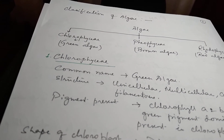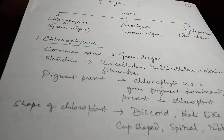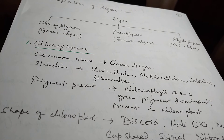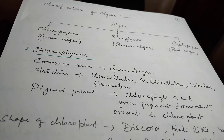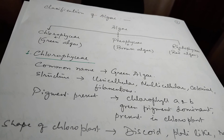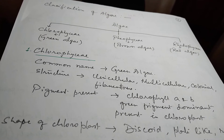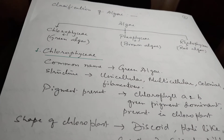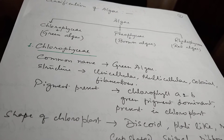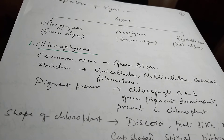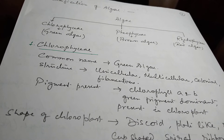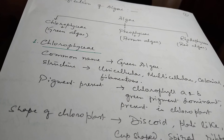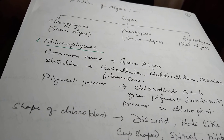Now the general characters of Chlorophyceae. Common name: green algae. Structure: unicellular, multicellular, colonial, or filamentous. Colonial means ये colony में पाये जाते हैं, और filamentous मतलब multicellular होंगे और एक cell दूसरे cell के ऊपर attach होते जाएंगे, तो एक filament का formation होता है। Pigment present: Chlorophyll A and B — green pigment, dominant, present in chloroplast. इसीलिए इसको green algae कहा जाता है।